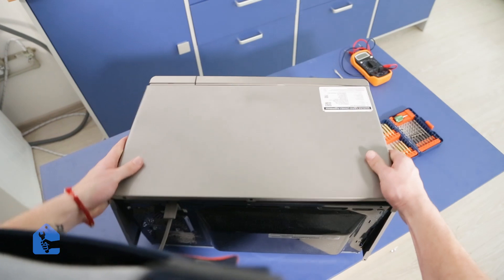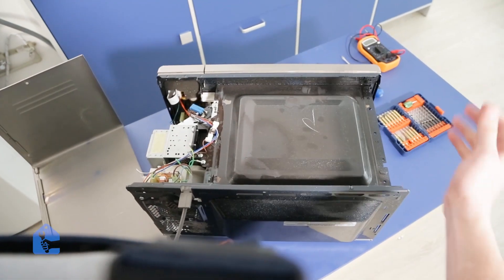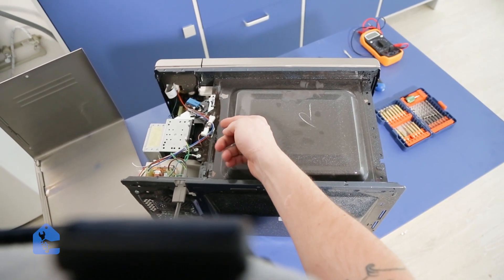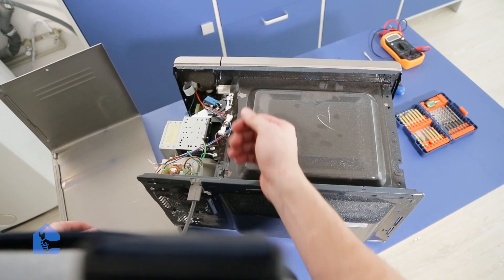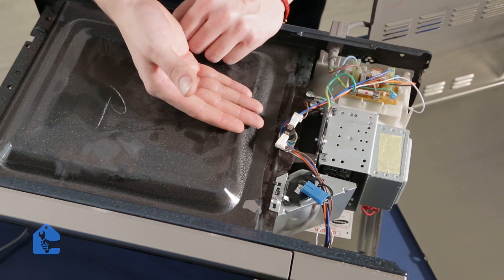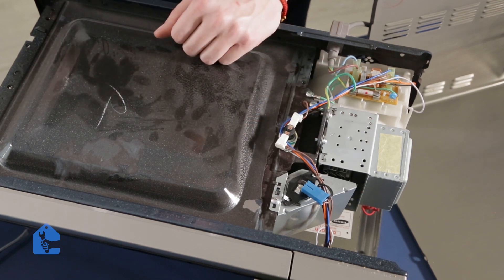So the first thing we're going to be doing is we're going to test every single fuse on our way and make sure they're working. In this type of microwave, we have two major fuses: one is right here and one in the back on the filter board.